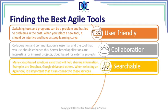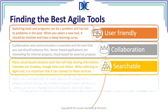Searchability is another criterion — the tool should connect with cloud storage services like Dropbox and Google Drive. When you select an Agile tool, it would be very interesting to connect it with these services, because it makes it easy to share documentation and information between all the people involved.